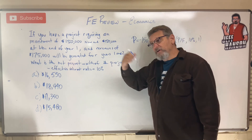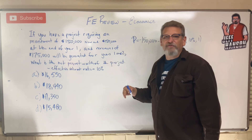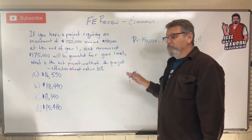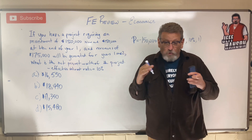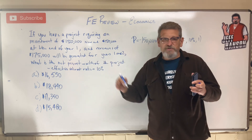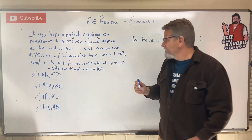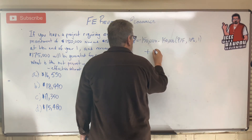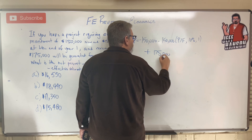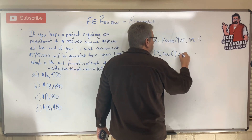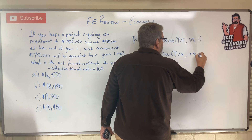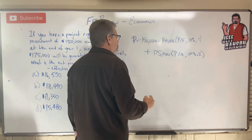Then for years one and two, revenues come in the same amount each year — that sounds like an annuity. Remember, the annuity formula doesn't account for year zero, so it counts for the first two years after that, which is exactly what this is. So that's plus $175,000 times P given A at 10% for two years.